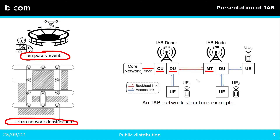The routing topology of IAB networks can be a spanning tree with the donor as root, or a directed acyclic graph if the IAB nodes can have multiple parents. In this work, we focus on IAB networks using the millimeter wave spectrum where time division duplex is used.